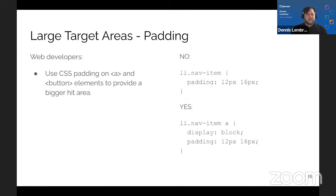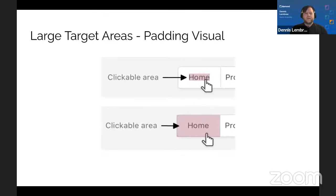Web developers take note: for anchors and buttons, use CSS padding — that's the general rule to create a bigger hit area. Don't put the padding on the container of the clickable element; put it on the anchor or button itself to make the actual target area larger. On screen is a graphic of a home button where the clickable area is just the word, versus the better version where the entire button is the target.